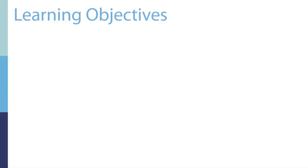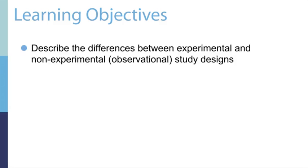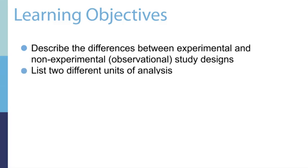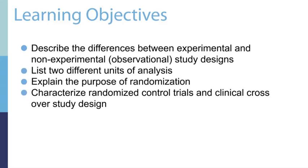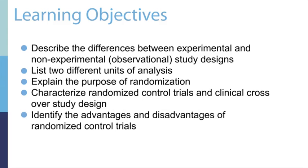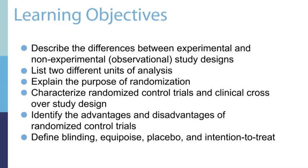After you have reviewed this lecture, you should be able to complete these learning objectives. They include: describe the differences between experimental and non-experimental or observational study designs; list two different units of analyses; explain the purpose of randomization; characterize randomized control trials and clinical crossover study designs; identify the advantages and disadvantages of randomized control trials; and define the following terms: blinding, equipoise, placebo, and intention to treat.